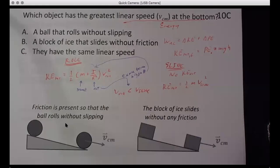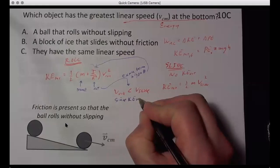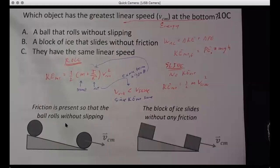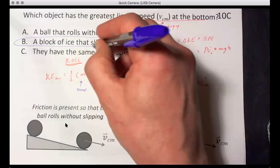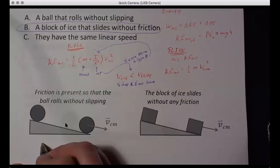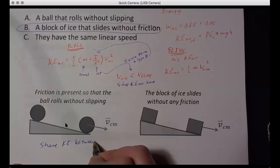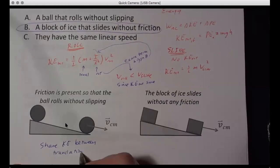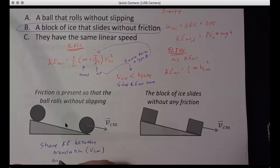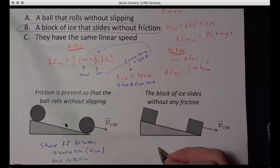And so since KE total is the same, that means that slide without friction wins. And the reason in words, which is always good to put down, is here we share the kinetic energy between translation, which is V center of mass, and rotation. And over here it's all translation. And so you're putting all your energy into translation and end up going faster.